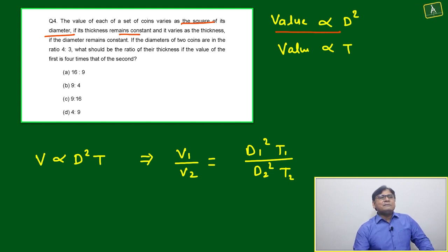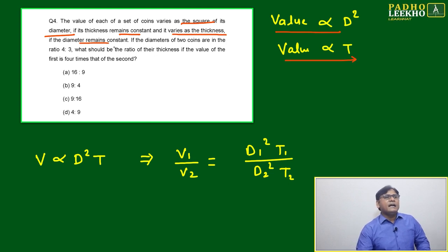If its thickness remains constant, the condition is thickness should be constant. And it varies as the thickness if the diameter remains constant. The next statement is telling if it varies as thickness, means value is directly proportional to thickness if diameter remains constant.